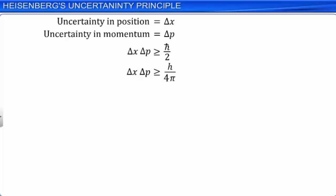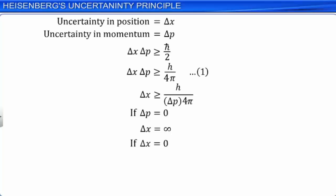Rearranging the terms in equation 1, we see that greater the value of delta x, smaller will be the value of delta p, and vice versa. If delta p is equal to 0 — that is, when the uncertainty in the momentum of the particle is 0 — then the uncertainty in the position of the particle becomes infinity; it is impossible to exactly determine the position of the particle. Similarly, if delta x is equal to 0, then delta p becomes infinity: if the uncertainty in position of the particle is eliminated, we cannot determine its exact momentum.